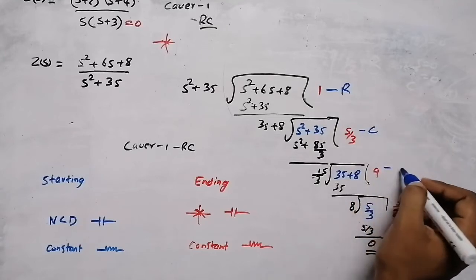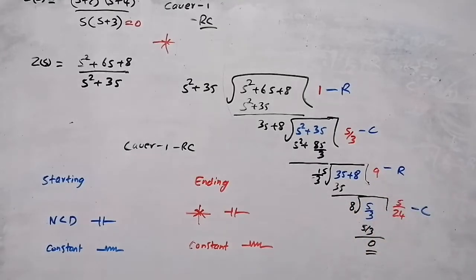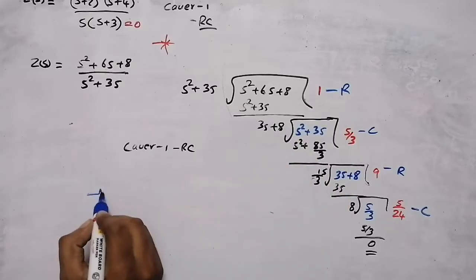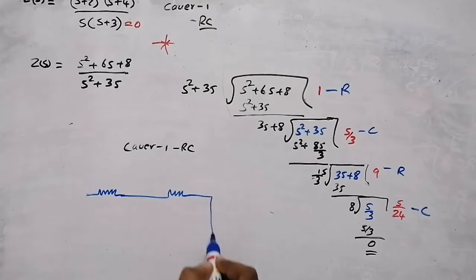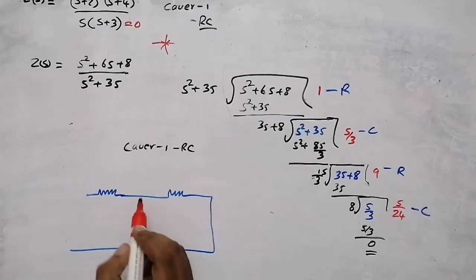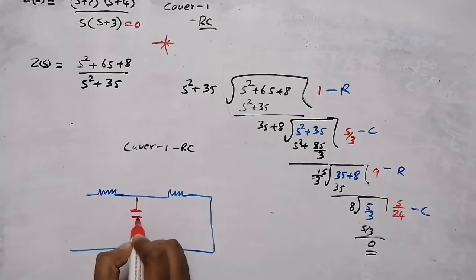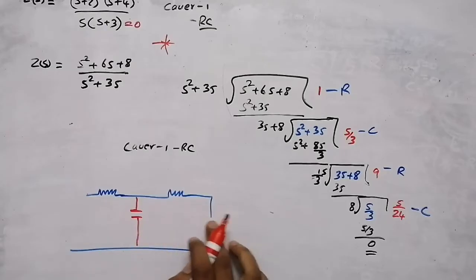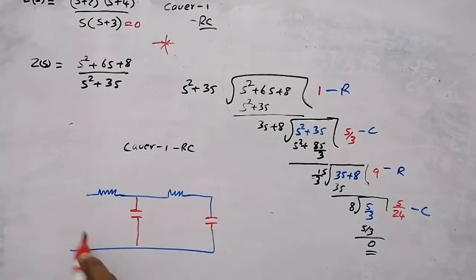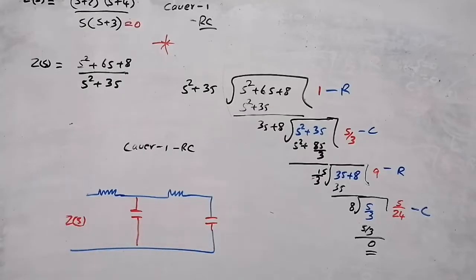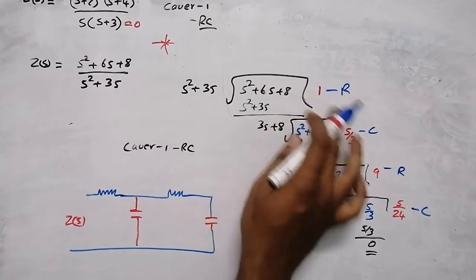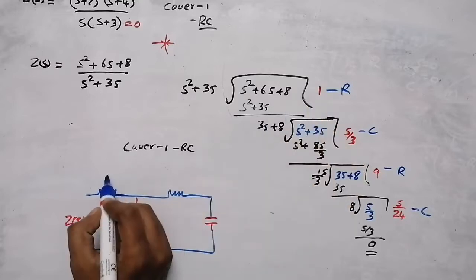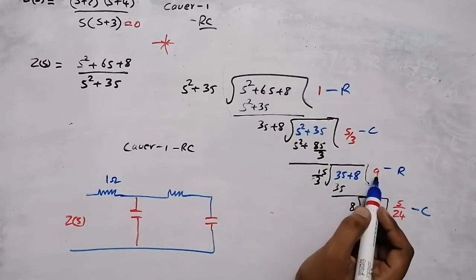Writing in alternate form: starting with a resistor, then capacitor, then resistor, then capacitor. So the circuit starts with a resistor, then there is one more resistor in series. In shunt we have a capacitor, and then again another capacitor. For getting component values — for series elements, write the value directly. Here the first resistor is 1, so its value is 1 ohm. The next series resistor is 9, so its value is 9 ohms.